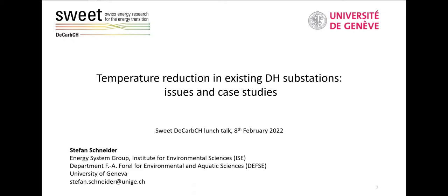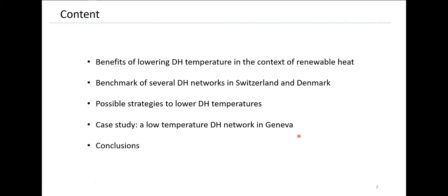It's nice to dig into a case study to illustrate what happens in real situations. First, to give a general framework, I'll show a small example illustrating the benefits of lowering district heating temperature levels in the context of renewable heat — to see where we are today and where we could go. I'll show two benchmarks on temperature levels: one in Switzerland, one in Denmark. Then we'll look at possible strategies to lower temperature levels, and end with a case study on a low-temperature district heating network in Geneva, followed by conclusions.